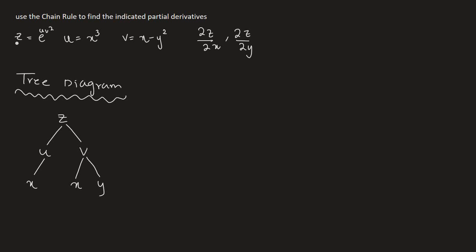Let me explain once again. You start with the first function, z. You write z at the top and see how many variables it has — it has two variables, u and v. So you make branches for u and v. Then you see what variables u and v are functions of. So u is a function of x, and v is a function of x and y.